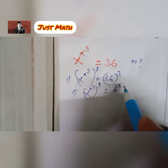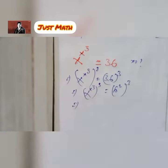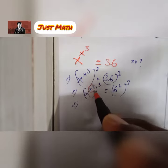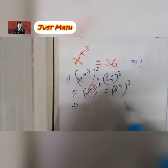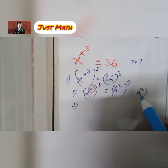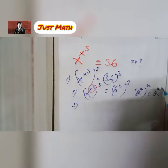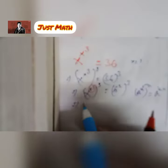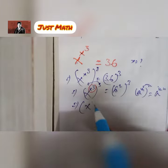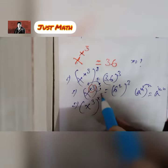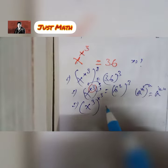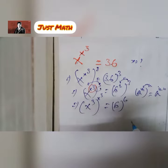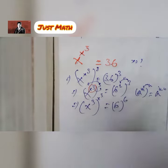36 is 6 squared. Now using the rule a to the power m, whole to the power n, equals a to the power m times n, I can write x cube to the power x to the power 3 equals 6 to the power 3 multiplied by 6.